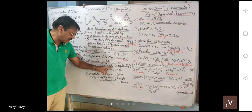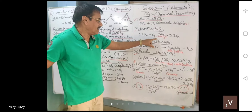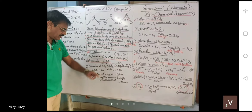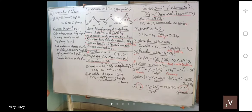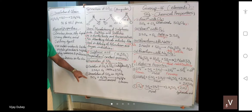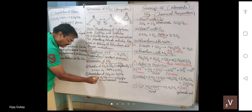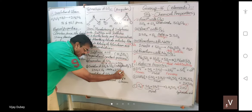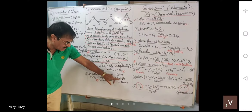Step two is the oxidation of sulfur dioxide to sulfur trioxide. Step three is the dissolution of SO3 in a small amount of H2SO4 — this is called seeding, where the product is dissolved in itself. The SO3 gas obtained is dissolved in a small amount of sulfuric acid to get oleum.